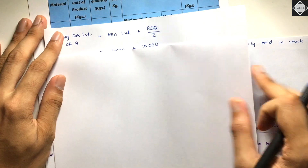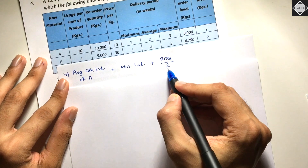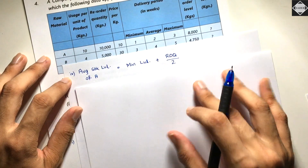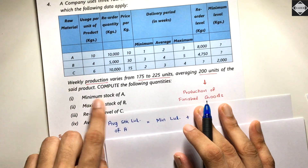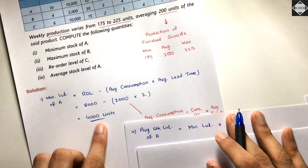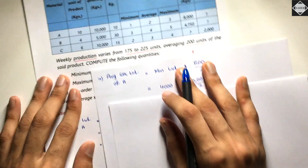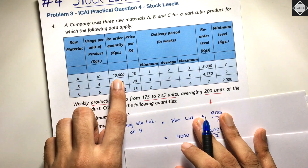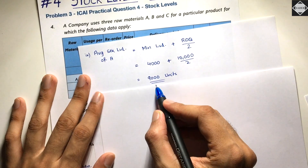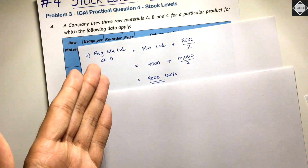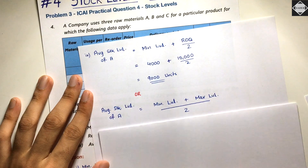Using the first formula: average stock level equals minimum level plus ROQ divided by two. Minimum level of A was calculated as 4,000 units in the first requirement. ROQ of material A is 10,000 kgs. So 10,000 divided by 2 is 5,000, plus 4,000 equals 9,000 units. That is the average stock level of A from the first formula.